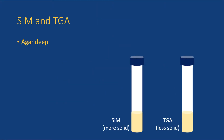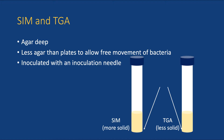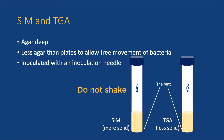SIM and TGA are agar deeps. These media are prepared with agar, but there is less agar in the medium to allow free movement of motile bacteria throughout the tube. The bottom of the medium is called the butt. These two media are inoculated with an inoculation needle. There are purple inoculation needles included in your box. The tubes should be labeled with the name of the medium, but they are easily distinguished because SIM is more solid than TGA. Avoid shaking the tubes vigorously so as not to mix in a lot of oxygen.